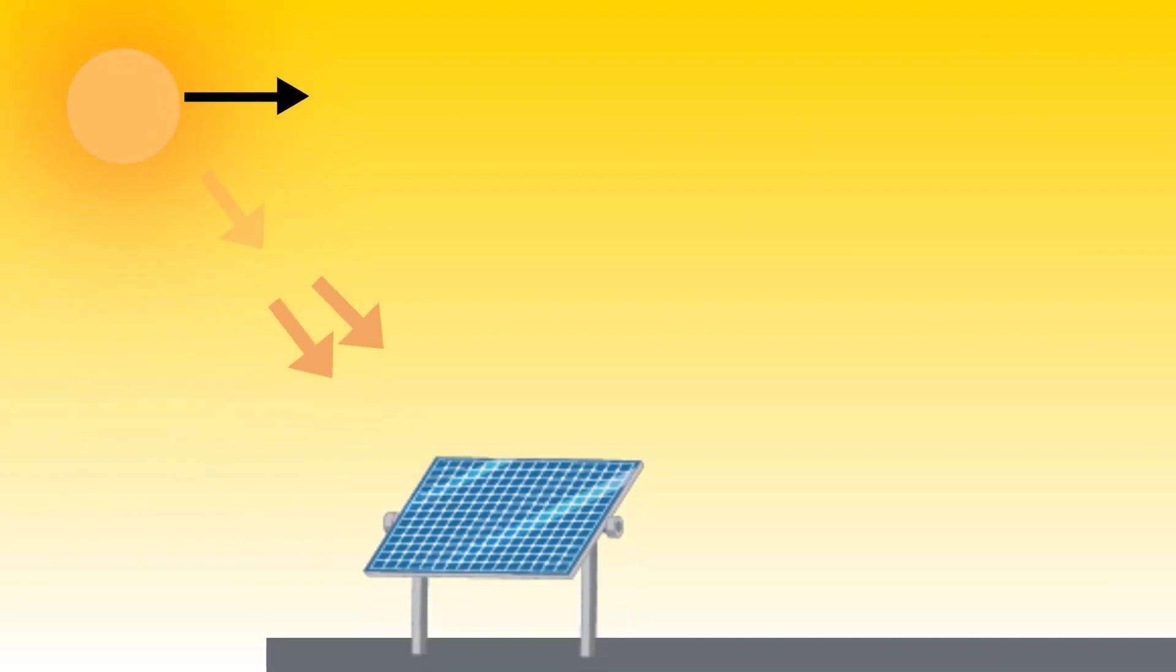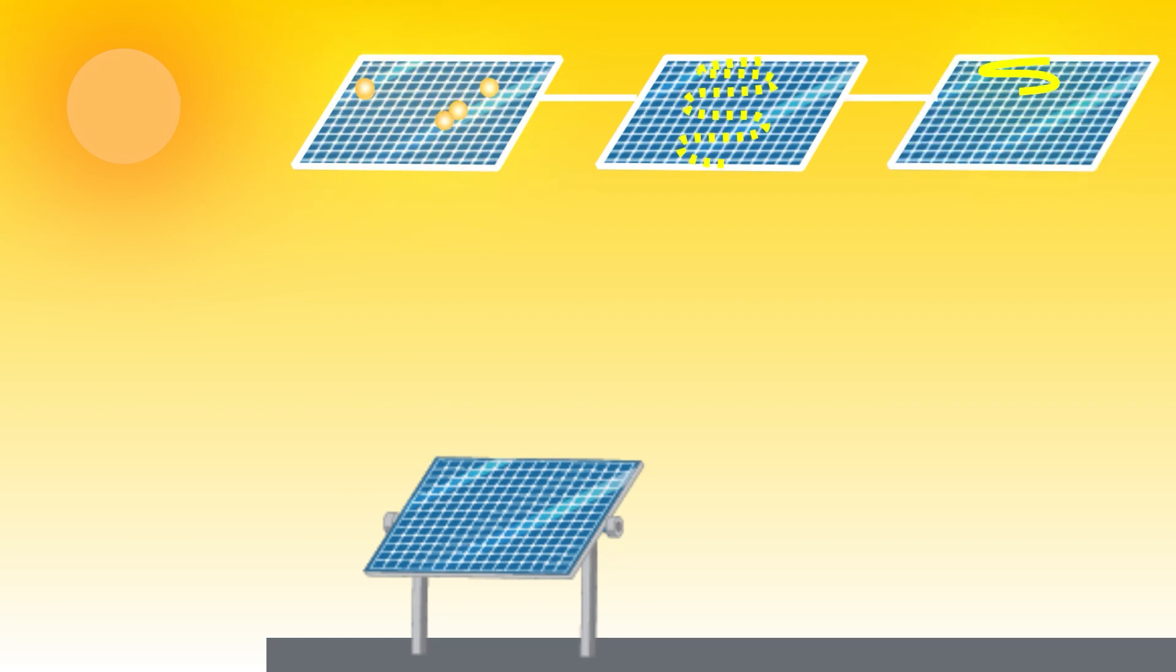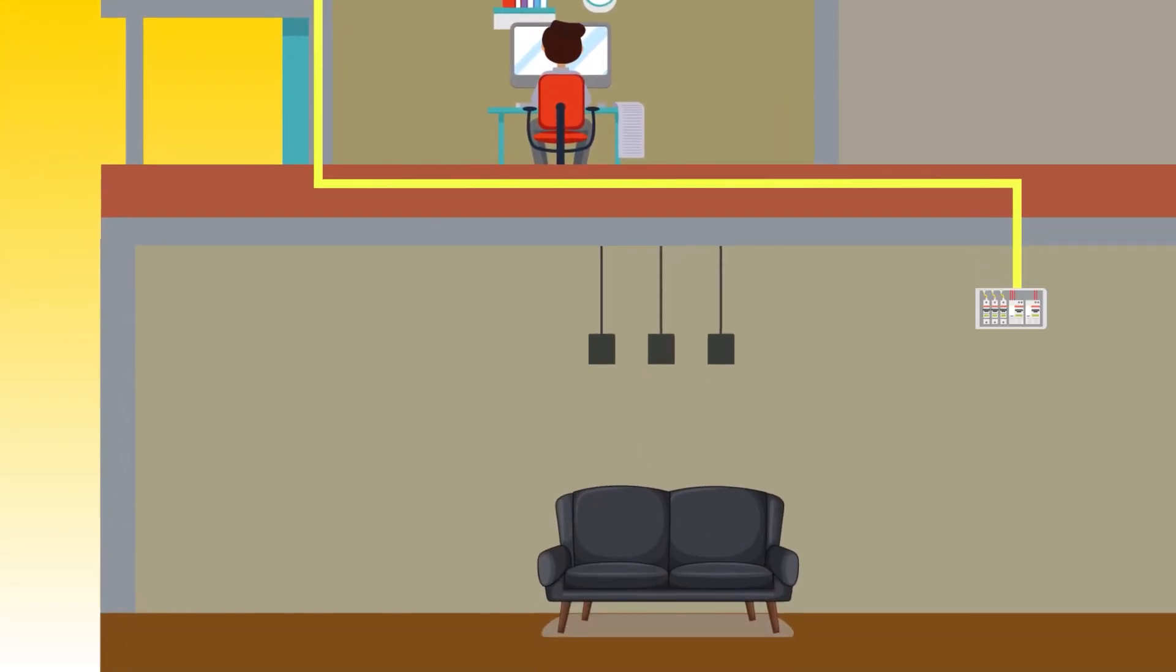A solar panel converts light from the sun, which is composed of particles of energy called photons, into electricity that can be used to power electrical loads. They generate direct current, which is fed to solar inverter to produce an alternating current output.